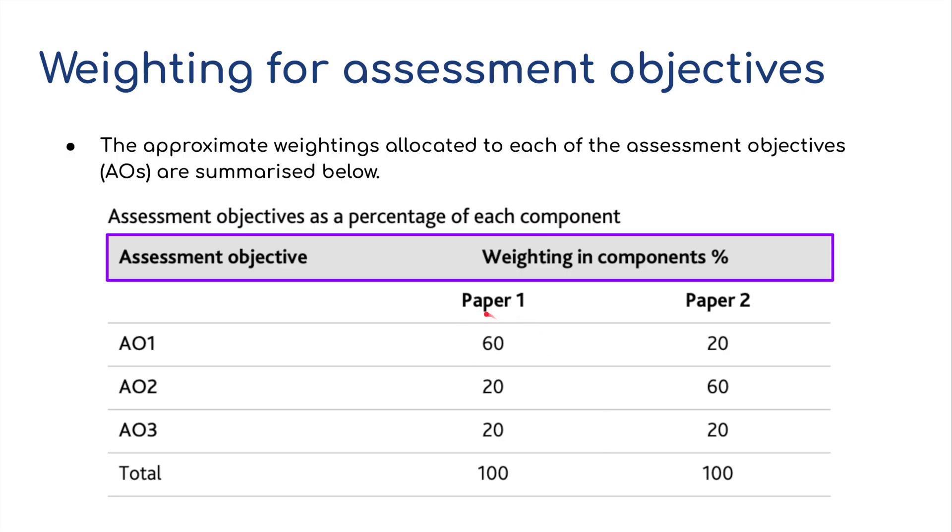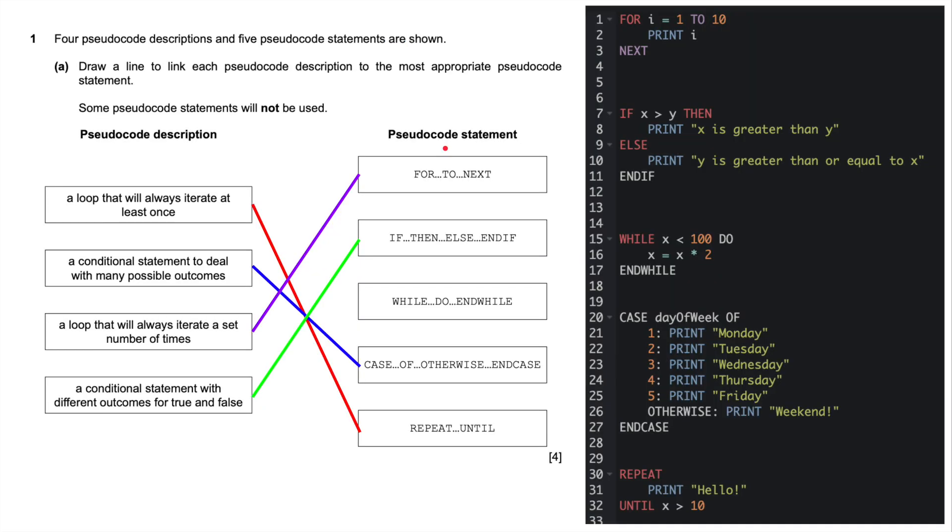AO1 is predominantly theory, so 60% of the paper, a little bit of AO2 and AO3. And AO2, the problem solving bit, obviously features a lot heavier in paper 2. So we will make a start.